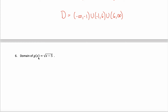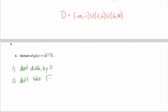Here's a function: g of x equals the square root of x minus 5. If you stare at this for a minute, you might convince yourself that there are no values of x that will cause division by zero. There are no fractions, no division going on here — nothing that will cause the first domain rule to go wrong. So I can completely ignore that first rule.